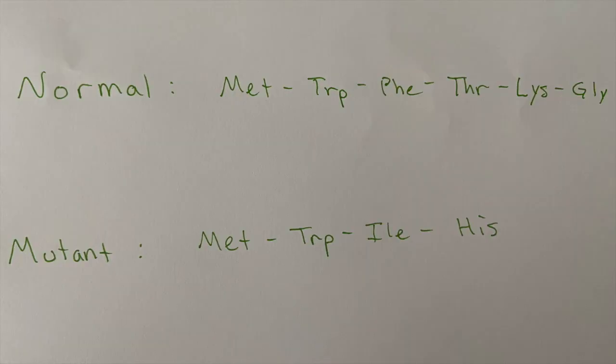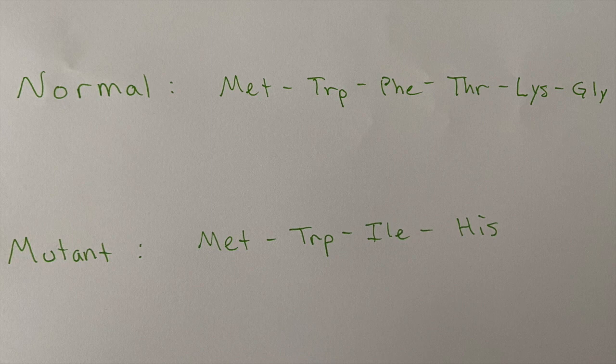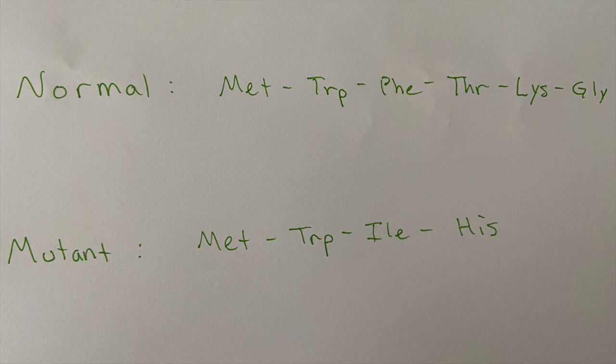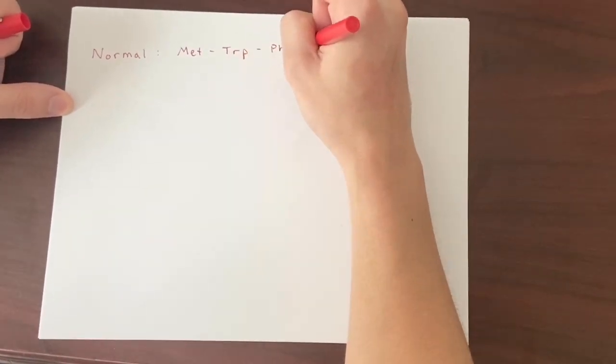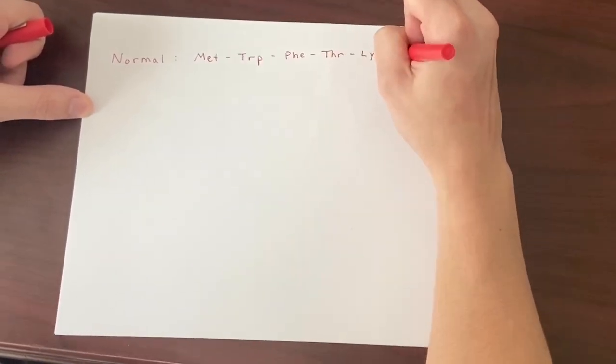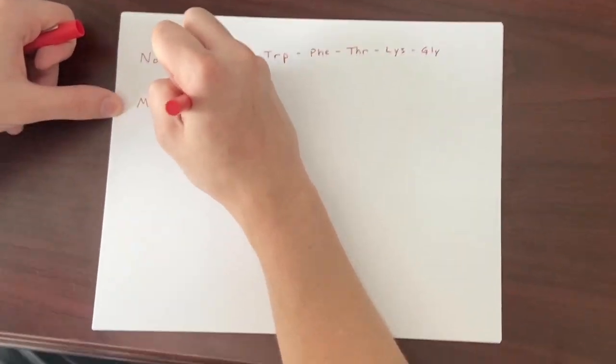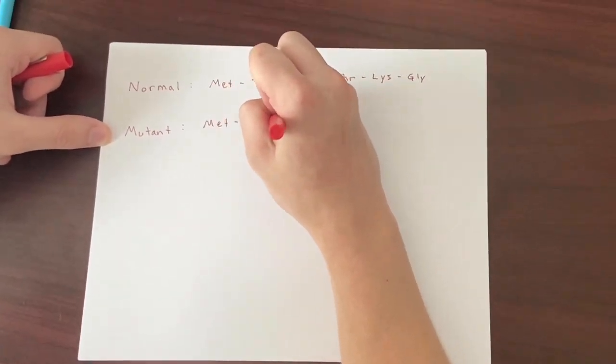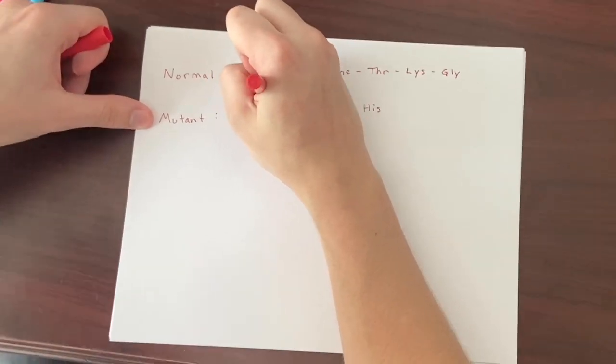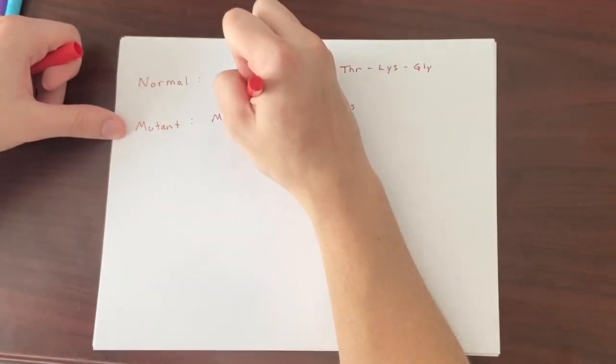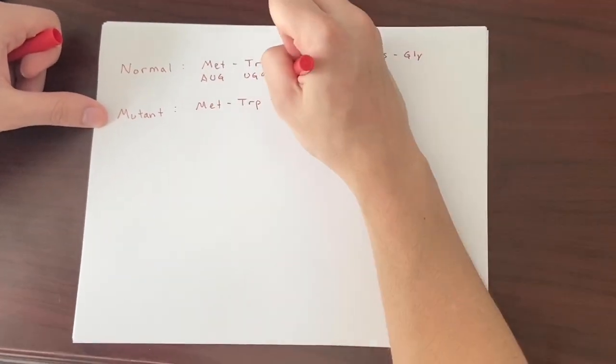For example, we have this normal DNA strand reading methionine, tryptophan, phenylalanine, threonine, lysine, glycine, and we have the mutant DNA strand reading methionine, tryptophan, isoleucine, and histidine. From these two sequences, we can tell a lot, such as that the normal strand continues past what is given to us in this problem, and that the mutant strand stops after histidine, with a stop codon. Another thing we can tell from this sequence is that the mutation occurred somewhere between the tryptophan and the phenylalanine, because that's where the mutant strand differs from the normal.